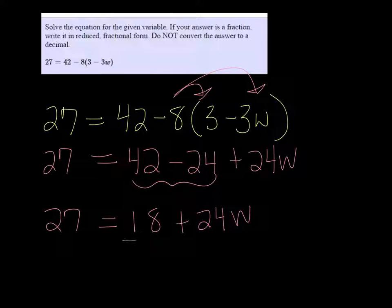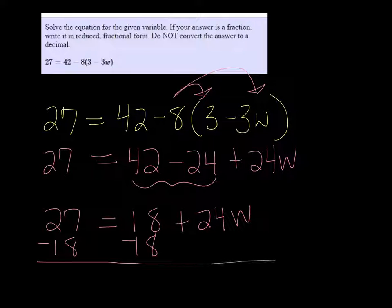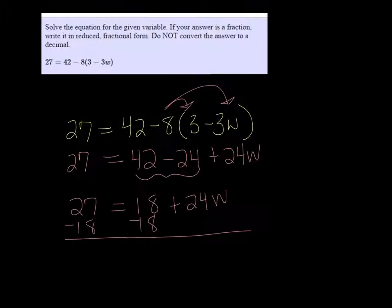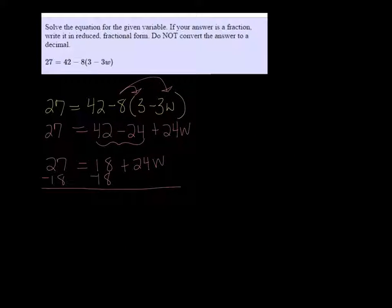We want to subtract that 18 on both sides. So 27 minus 18 is going to be 9.